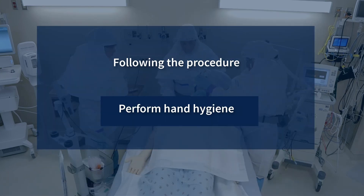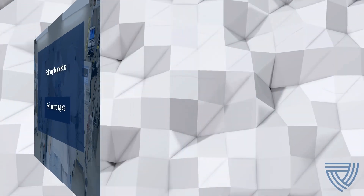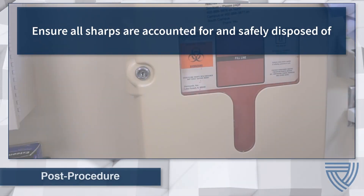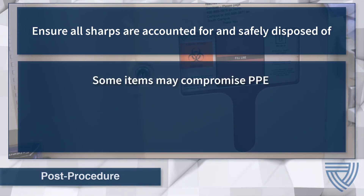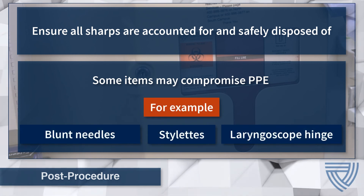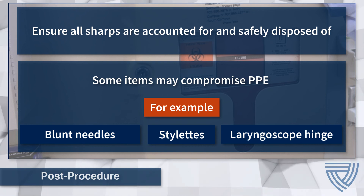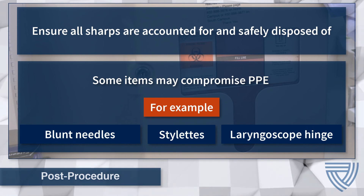Following the procedure, perform hand hygiene. Ensure all sharps are accounted for and safely disposed of. Some items used during the procedure, such as blunt needles and intubation stylets, may be considered sharps in a special pathogen isolation area and should be disposed of following institutional protocol.